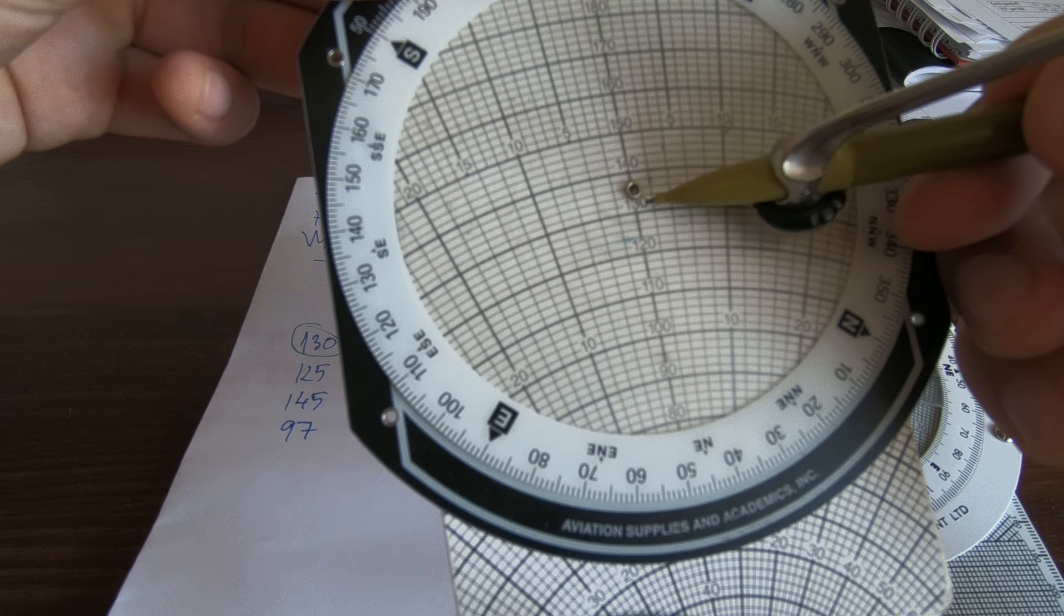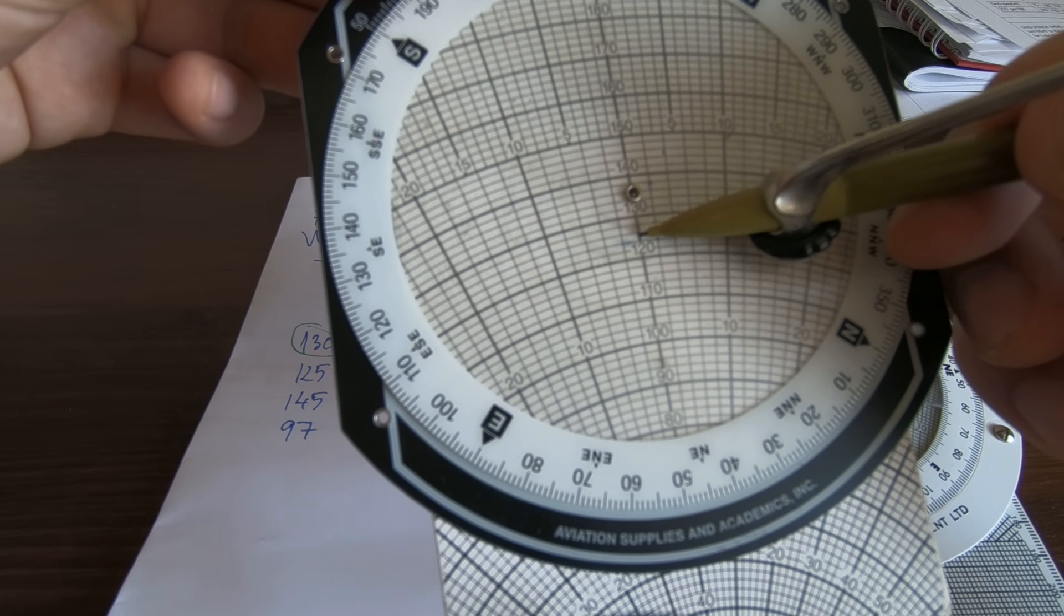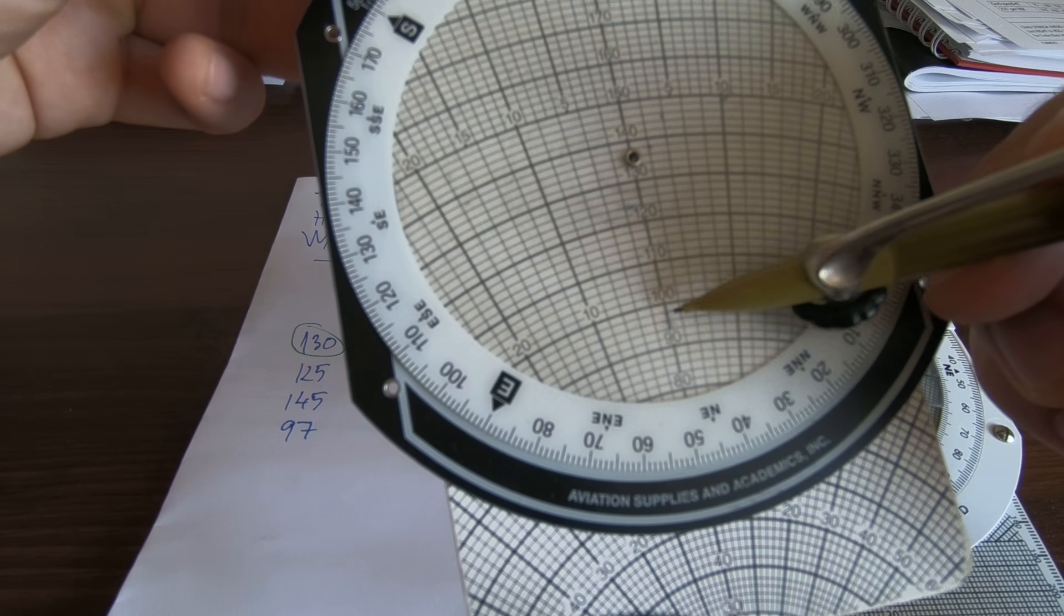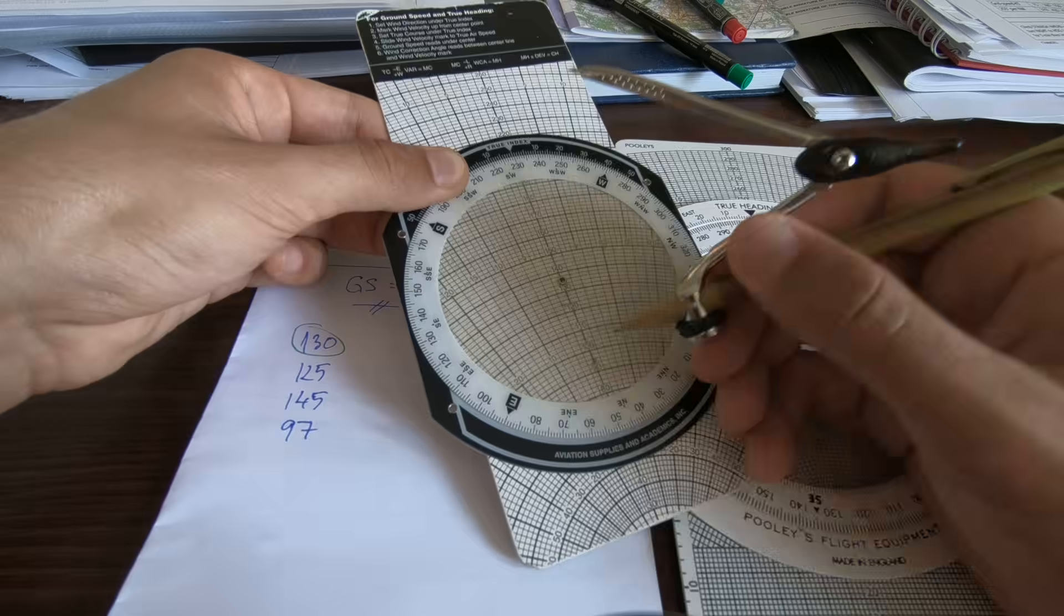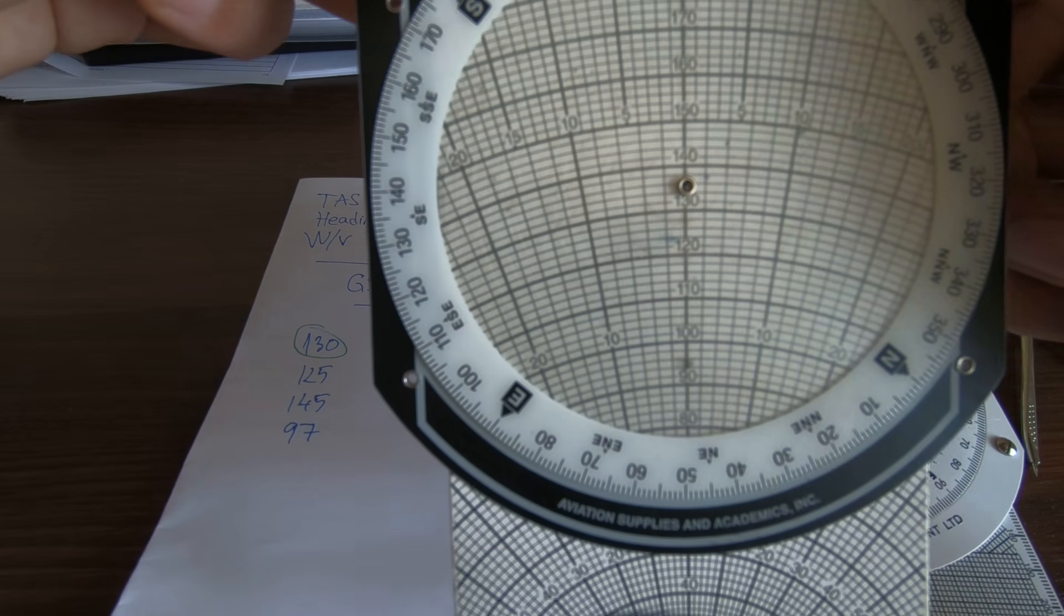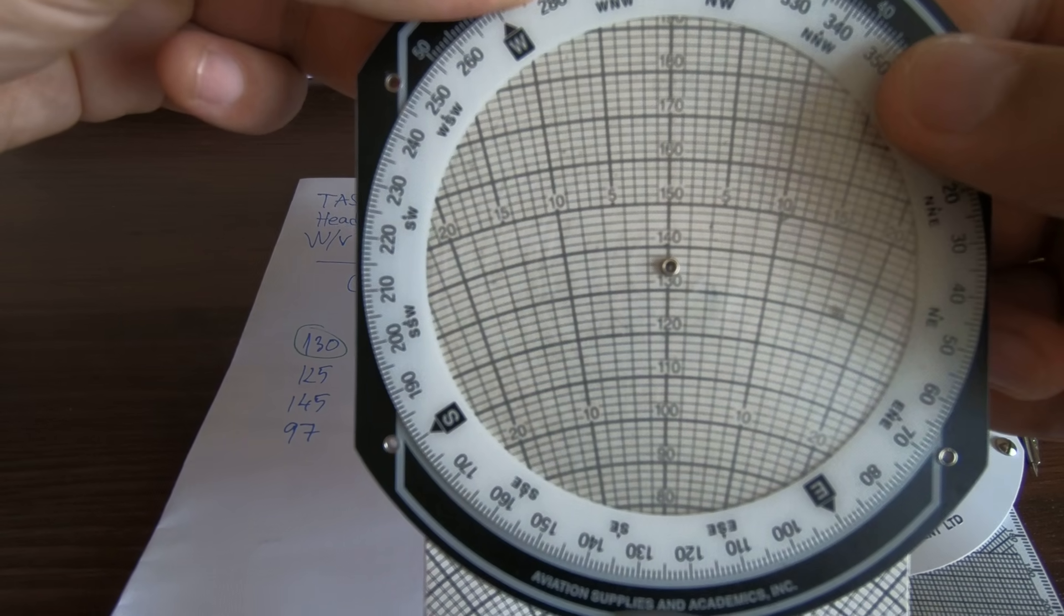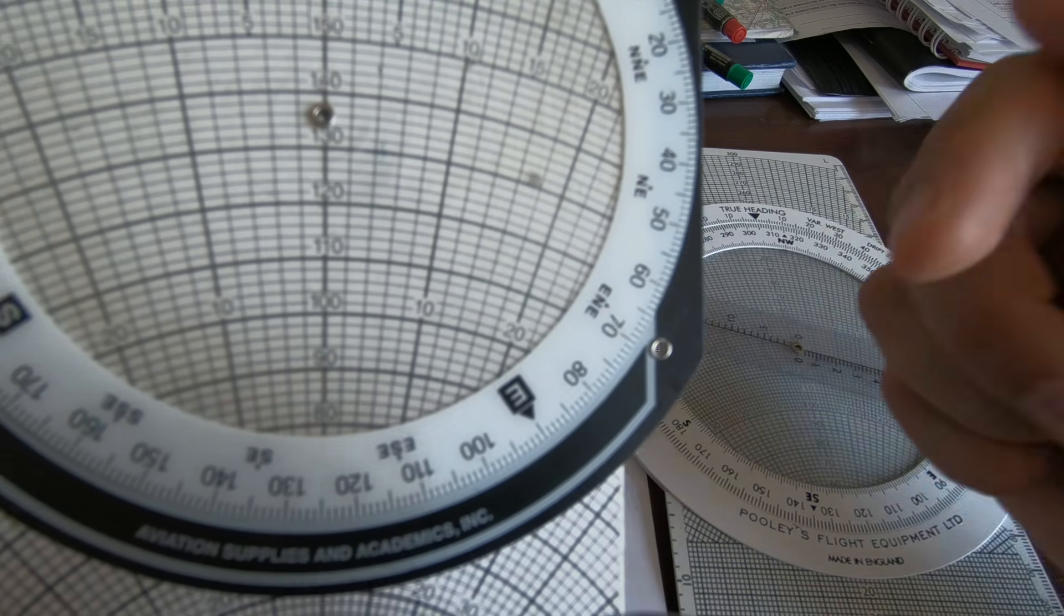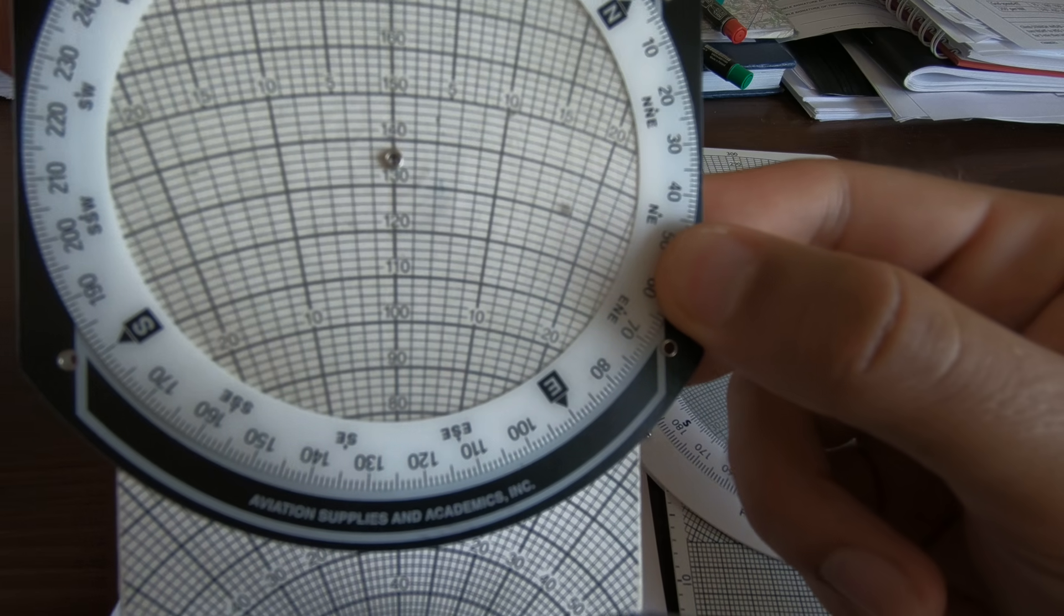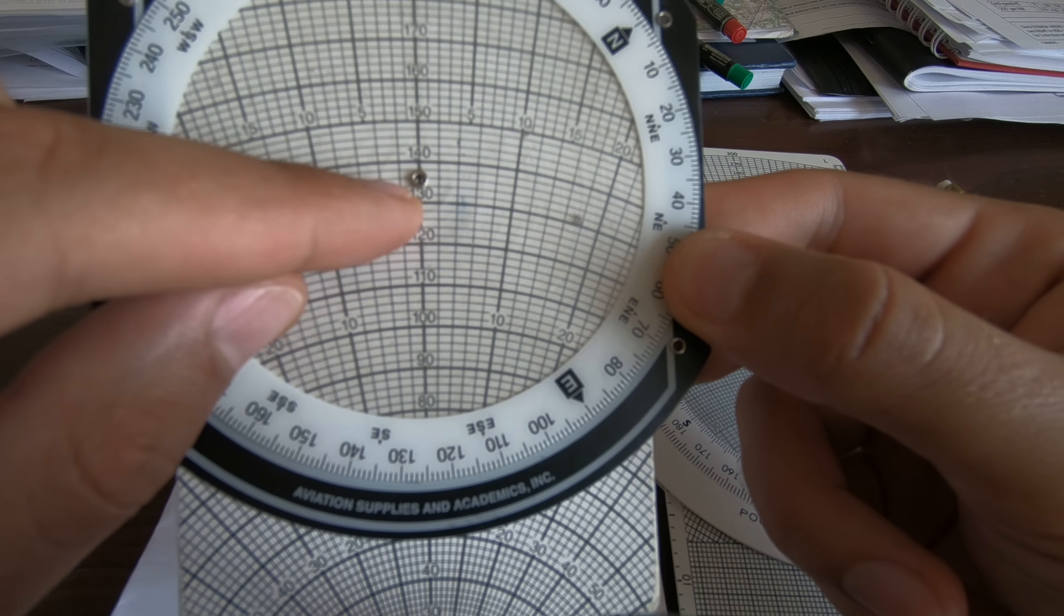So every line is 2 knots, so we have to do like this is 10, 20, 30, 40. So over here, make a note. And then we go for the heading 305, and where the mark is, that is where the ground speed is.